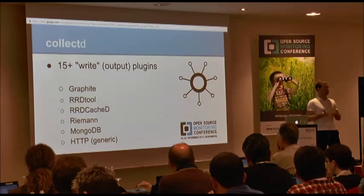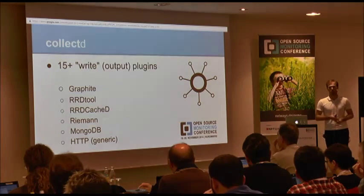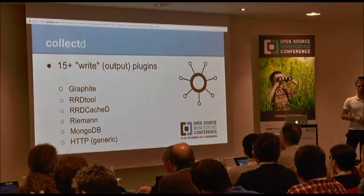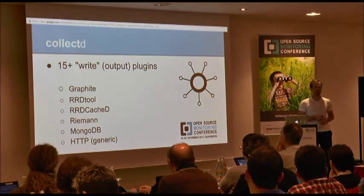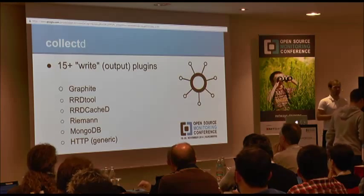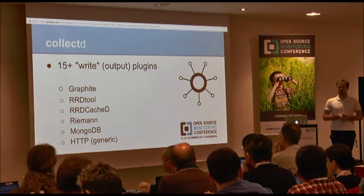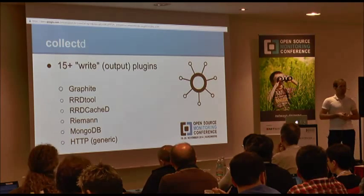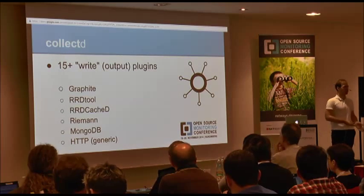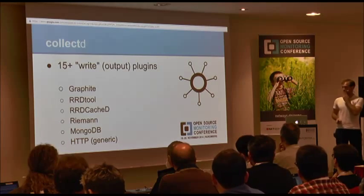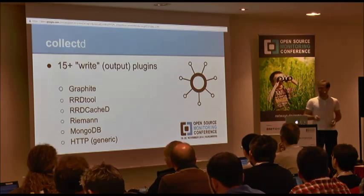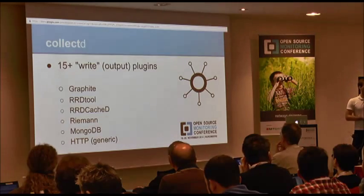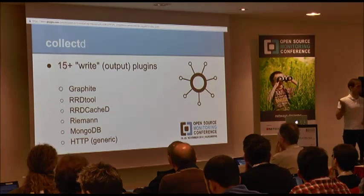On the output side, once you have collected the metrics, you usually want to get them out somewhere. Today I'm going to focus on Graphite. A more traditional choice would have been RRDtool, possibly via the caching daemon. Riemann has been mentioned too, which can do a lot of metric aggregation. You can write to MongoDB. There's a write HTTP plugin that does POST requests with JSON data, and a lot of fancy new monitoring startups use that way to get metrics into their systems.